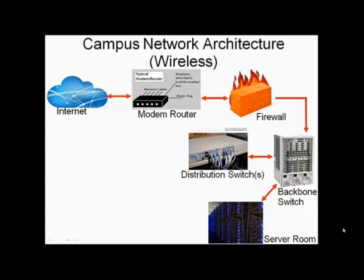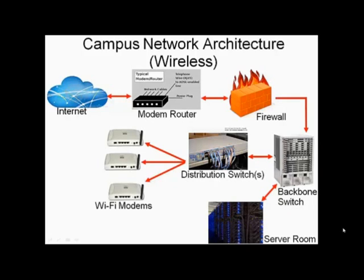The distribution switches connect multiple wireless modem-routers to the local server and the internet. These wireless modem-routers provide wireless access to Wi-Fi enabled devices. Wireless repeaters can be installed at key points to enhance range and signal quality throughout the campus by boosting signals.